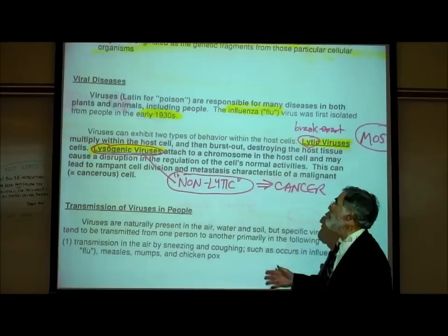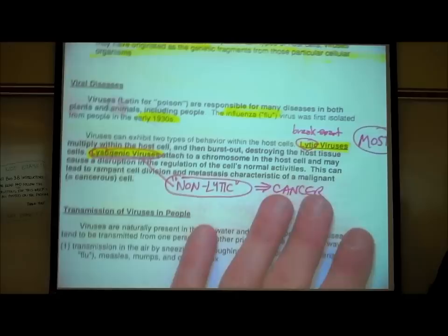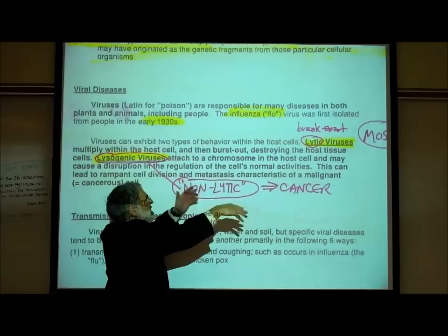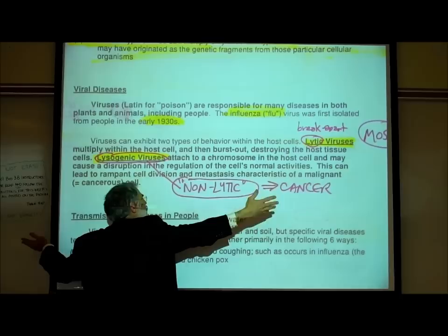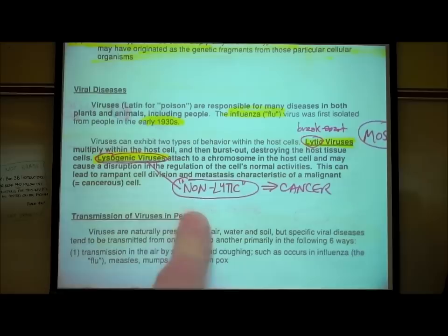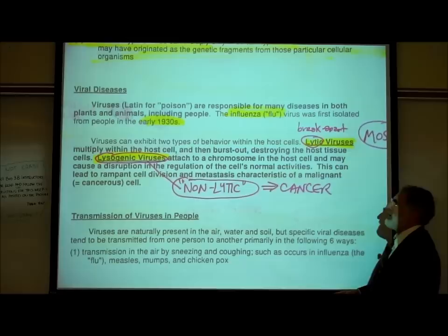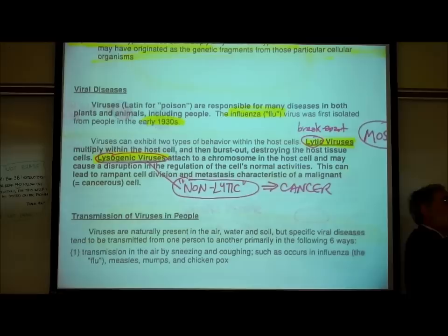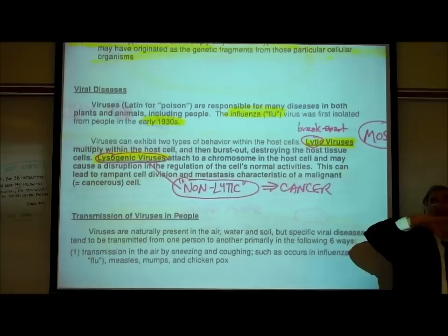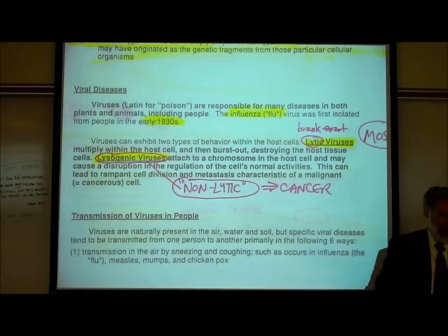Viruses can exhibit two types of behavior once they enter the host cell. Lytic viruses — which are most viruses — cause the host cell to break apart. The viruses burst out of the cell, destroying it. There is another type called a lysogenic, or non-lytic, virus. When a non-lytic virus enters a human cell, it can cause that human cell to become cancerous.